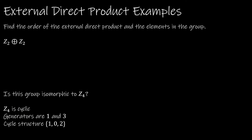Let's do the same with the external direct product of Z2 with itself. The number of elements is 2 times 2, which is 4. The group consists of: (0,0), (0,1), (1,0), and (1,1).